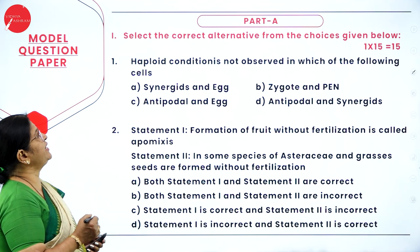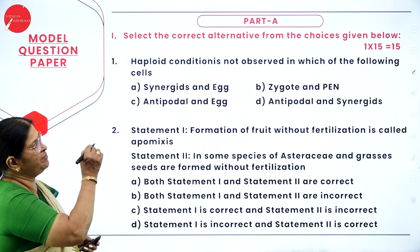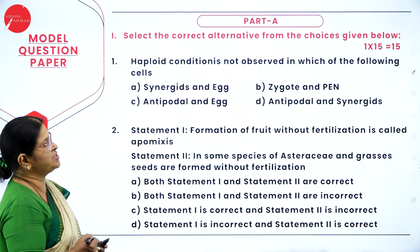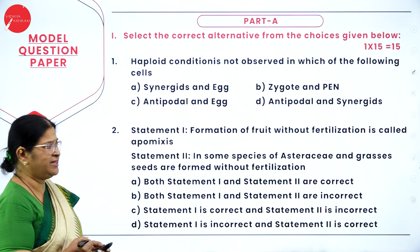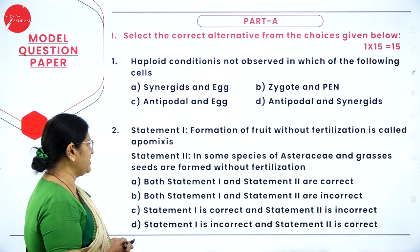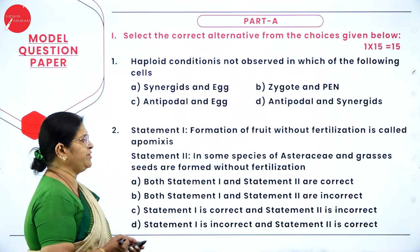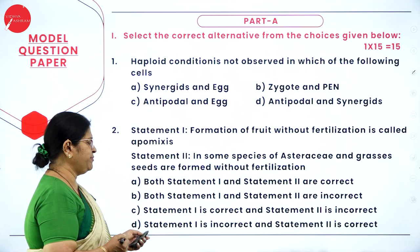Part A first main: select the correct alternative from the choices given below — 15 questions, 1 mark each. Question 1: haploid condition is not observed in which of the following cells? Option A: synergids and egg; Option B: zygote and PEN; Option C: antipodal and egg; Option D: antipodal and synergids. Question 2 (statement-based): Statement 1 — formation of fruit without fertilization is called apomixis; Statement 2 — in some species of Asteraceae grasses, seeds are formed without fertilization. Options A through D cover combinations of correct/incorrect statements.